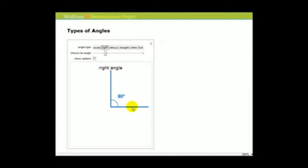An angle that equals exactly 90 degrees is a right angle. And then any angle between 90 and 180 is called an obtuse angle.